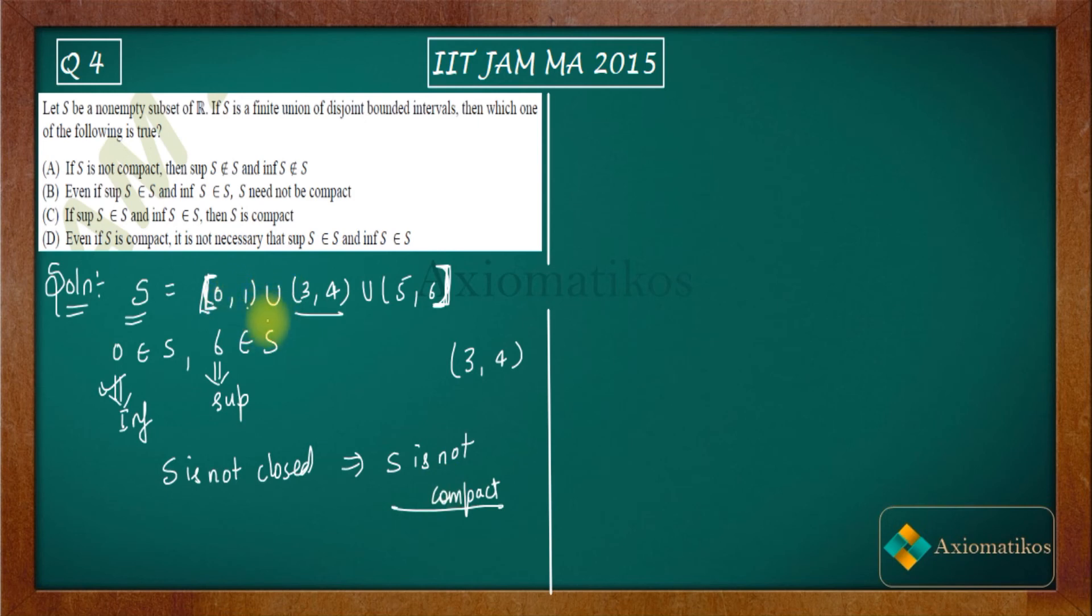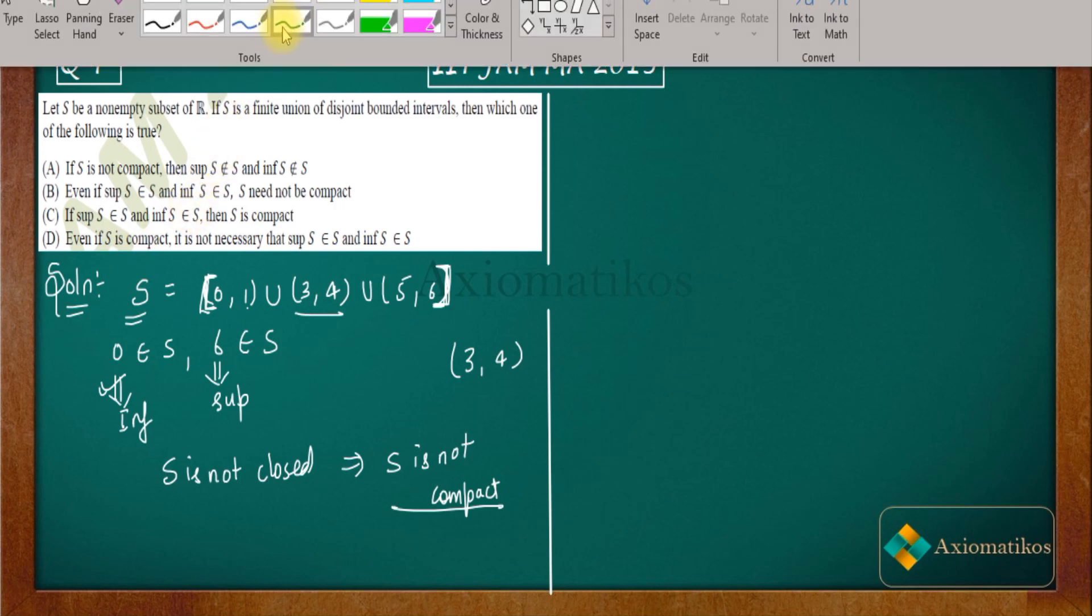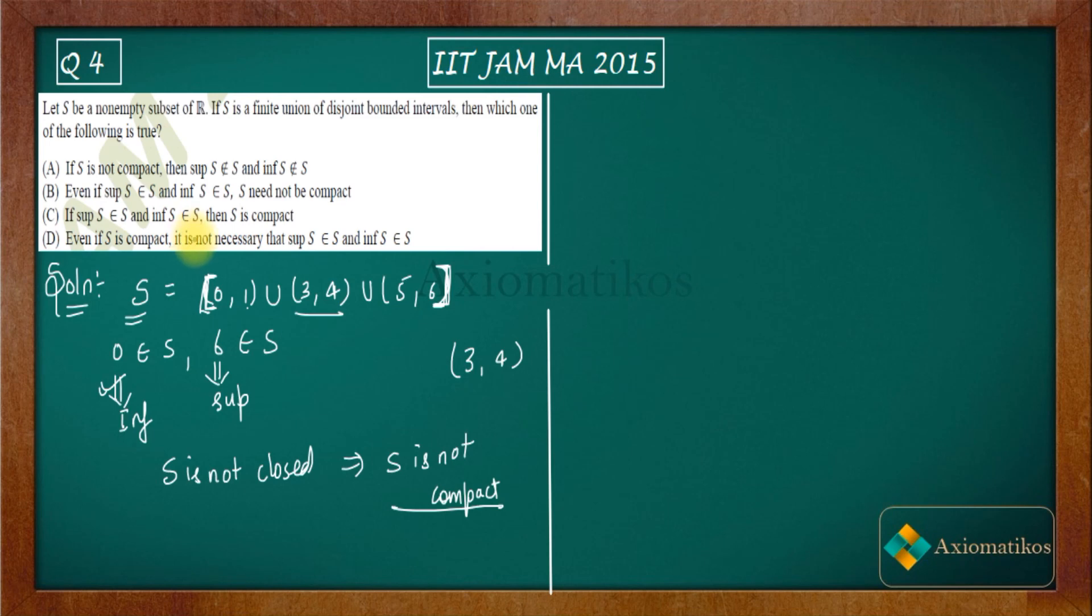Therefore B is true. I'm not going through options A, C, and D; you can always find counters for them. That's why your option B is true. So you should also do this way in your exam. If you look at this option that says even if supremum and infimum belong then it need not be compact, then you can directly think of this set.